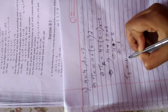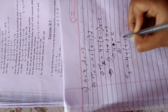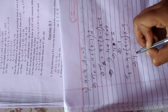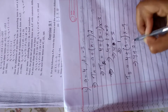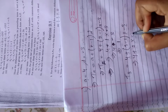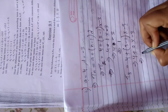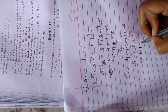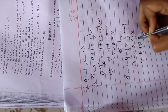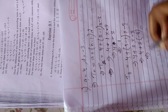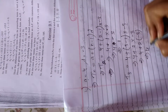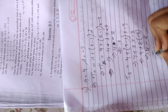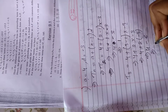T3 = a plus (n minus 1) into d: 4 plus (3 minus 1) into (-3) = 4 plus 2 into (-3) = 4 minus 6 = minus 2. So minus 2 is the answer.